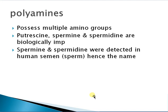Today I discuss about polyamines. Polyamines possess multiple amino groups. Putrescine, spermine, and spermidine are biologically important. Spermidine and spermine were detected in human semen — hence the name sperm.